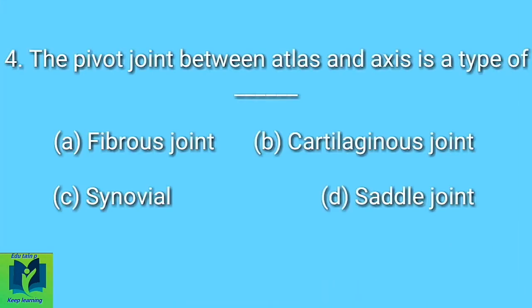The pivot joint between Atlas and Axis is a type of dash. Option A: Fibrous Joint. Option B: Cartilaginous Joint. Option C: Synovial Joint. Option D: Saddle Joint.